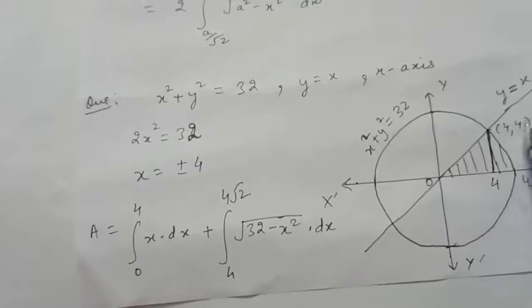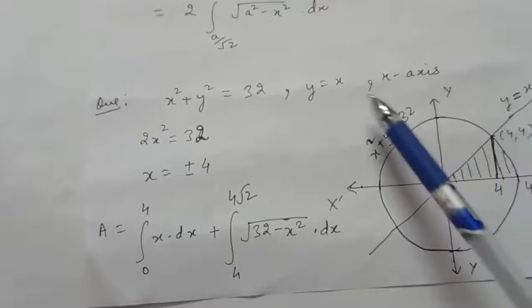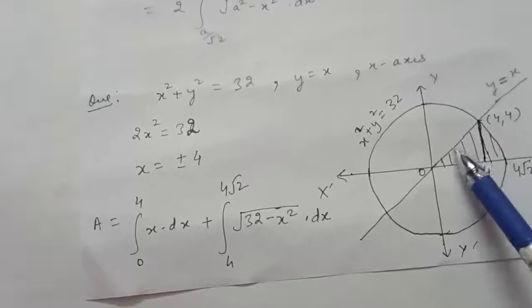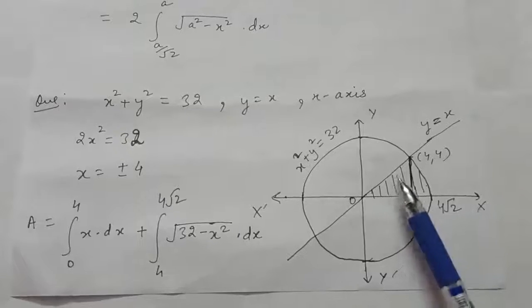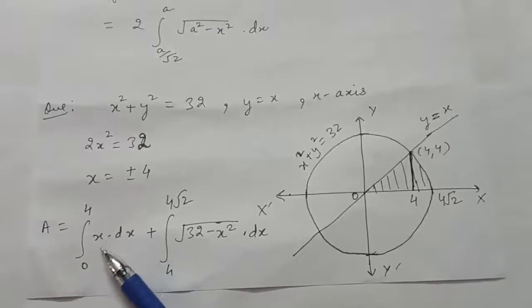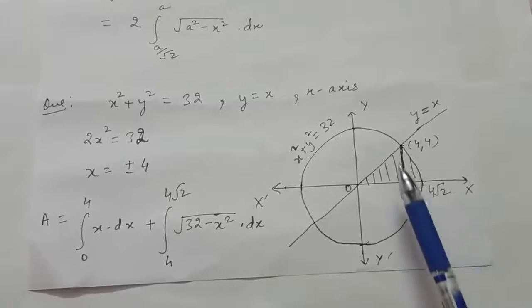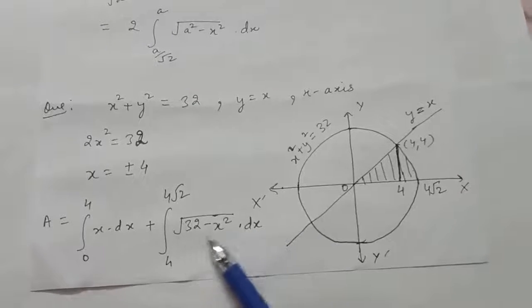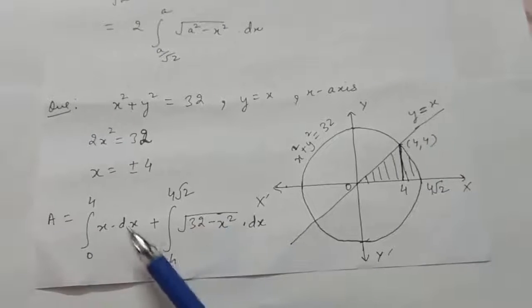When x = 4, y = 4. The limits are from 0 to 4 and from 4 to 4√2. From 0 to 4, the area lies below the line, so we integrate the function of the line (which is x). From 4 to 4√2, the area lies below the circle, so the function is √(32 − x²). Now solve both integrals and put the limits to get the answer.